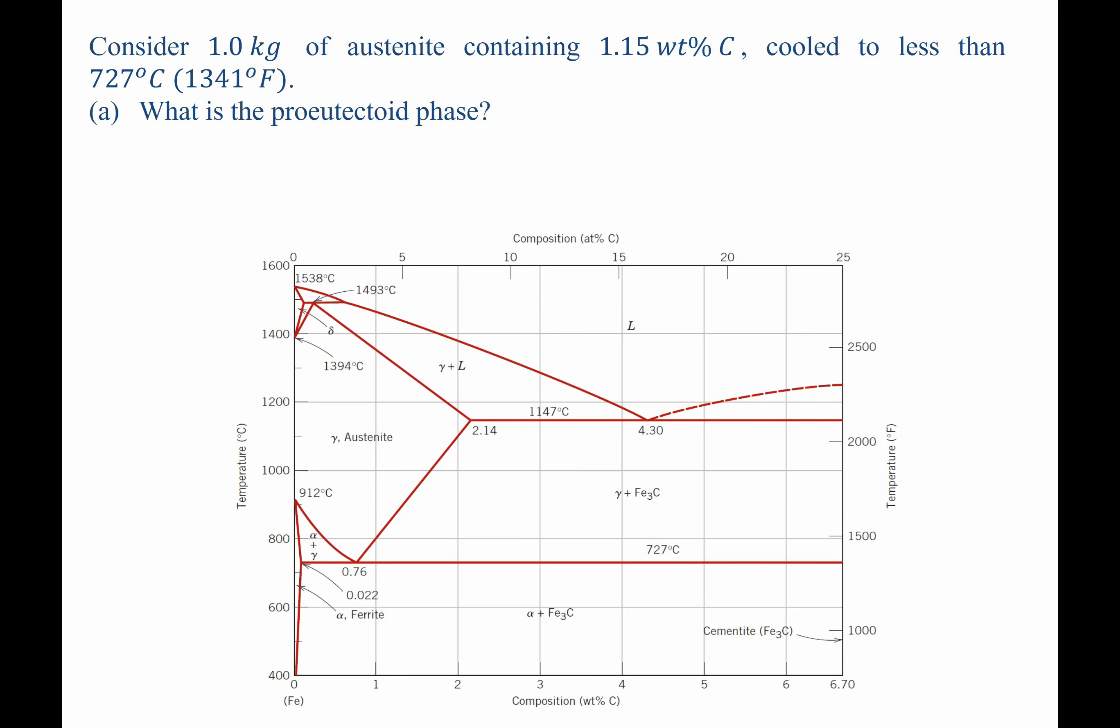We're asked to identify what the pro-eutectoid phase is. The pro-eutectoid phase is the phase that forms that's part of the eutectoid reaction but happens before the eutectoid temperature. So let's remind ourselves, a eutectoid reaction is solid 1 going to solid 2 plus solid 3, or in this case,